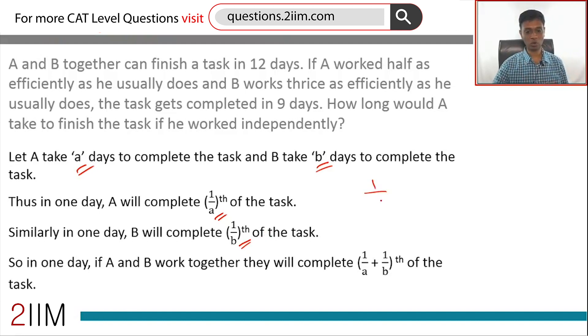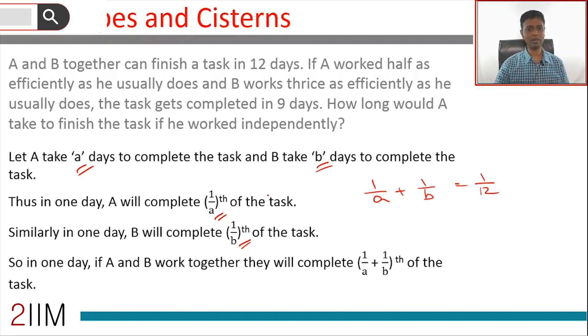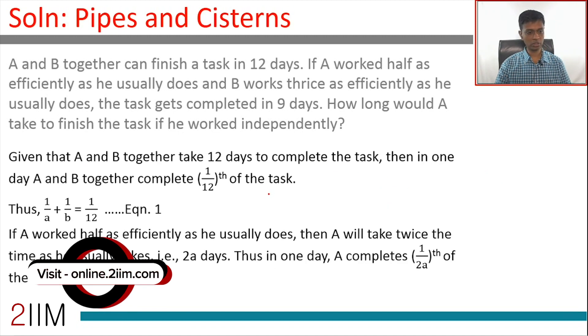Together they can finish this task in 12 days, or 1/a plus 1/b - what they do together in one day - is equal to 1/12. What A does plus what B does is 1/12. They can finish the task in 12 days, or in one day they would do 1/12th of the task. So the first equation we've got: 1/a + 1/b = 1/12.